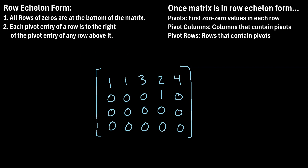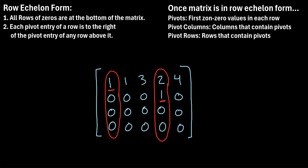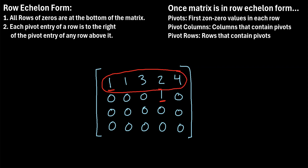Let's check out one more example. We have this matrix, which is already in row echelon form. The first pivot is the first non-zero value in the first row. In the next row, the first non-zero value is this one — so here's another pivot. The last two rows contain all zeros, so there are no more pivots — just these two. The pivot columns are the first column and the fourth column, since those are the columns that contain the pivots. The pivot rows are the first row and the second row.